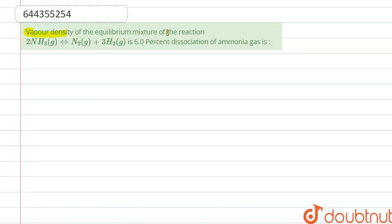Vapor density of equilibrium mixture of the reaction 2NH3 ⇌ N2 + 3H2 is 6. Calculate the percentage dissociation of ammonia gas.